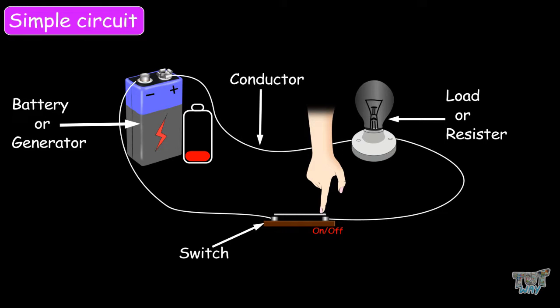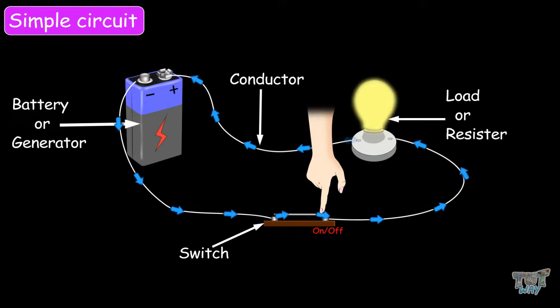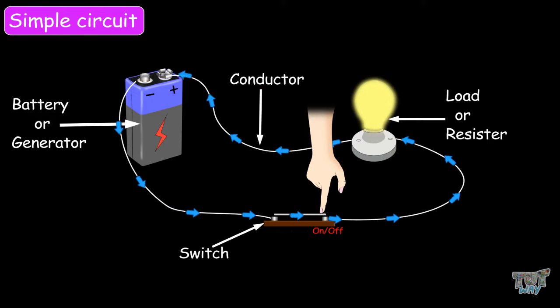Whereas, when the switch is off or if a wire is broken, the circuit is incomplete. The current cannot flow through an open circuit. The current only flows when the circuit is closed. When the current flows, the electric bulb starts glowing.